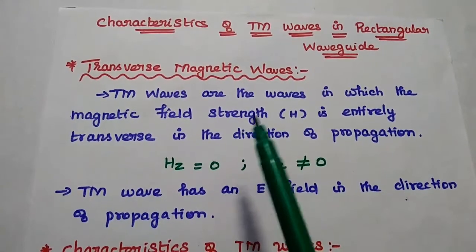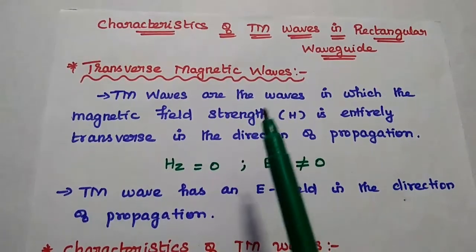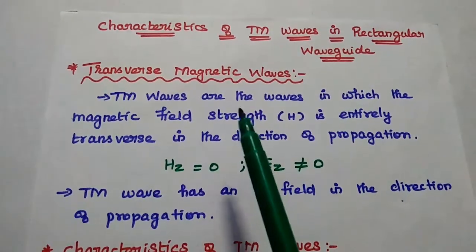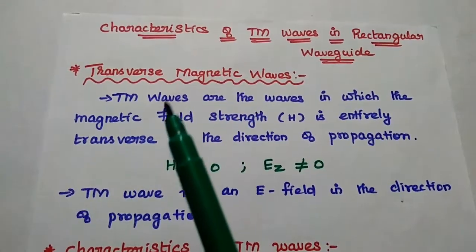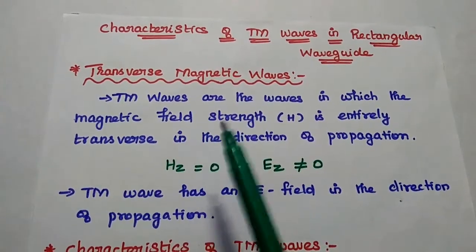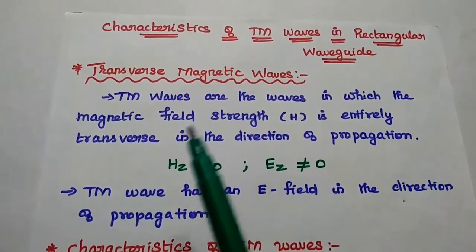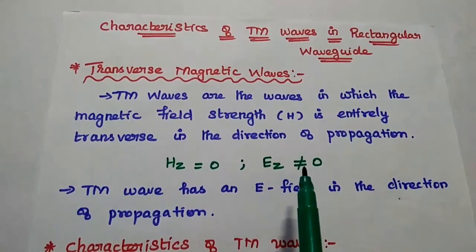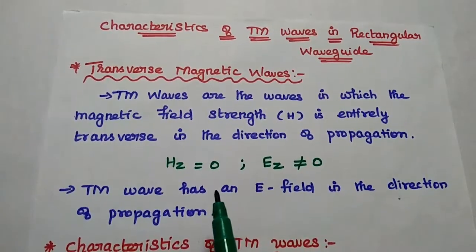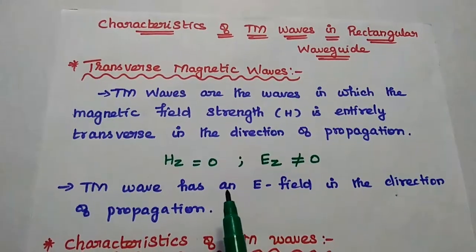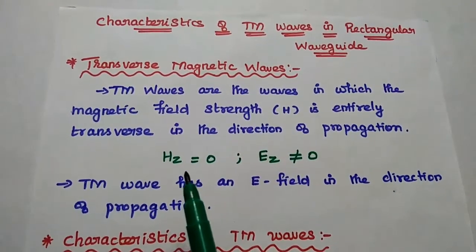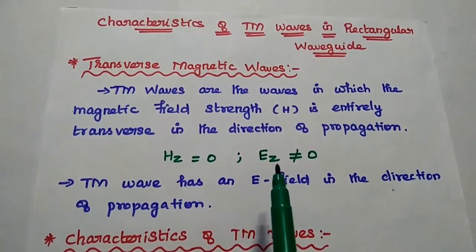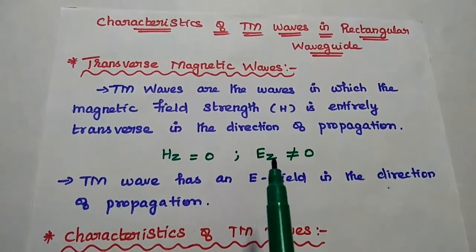Dear students, now we are going to discuss characteristics of TEM waves in rectangular waveguide. TEM means transverse magnetic. Transverse magnetic waves are the waves in which the magnetic field is entirely transverse in the direction of propagation. Here we can consider the wave is propagating in the Z direction. Then the magnetic field in the Z direction becomes zero and it has only the electric field in the direction of propagation.